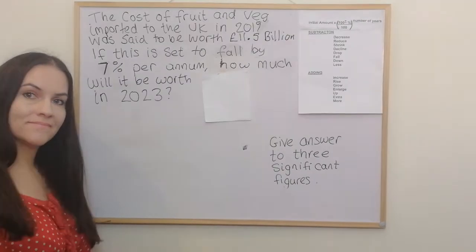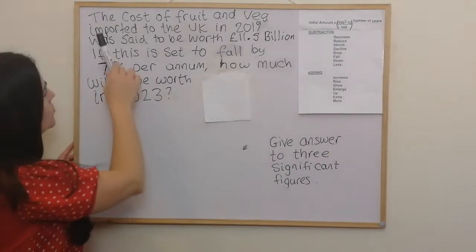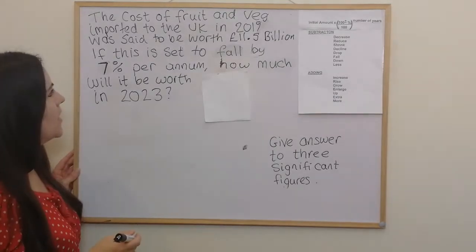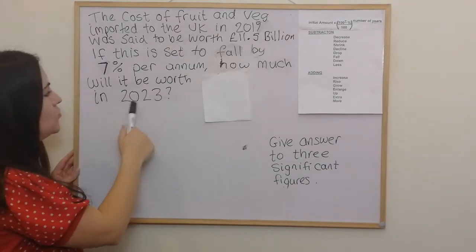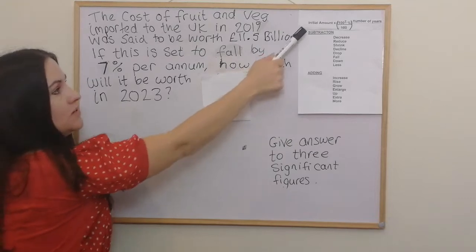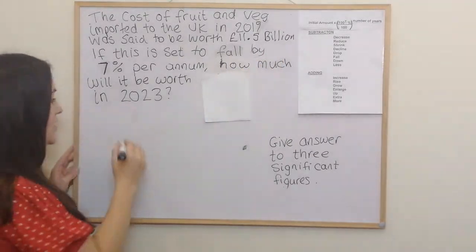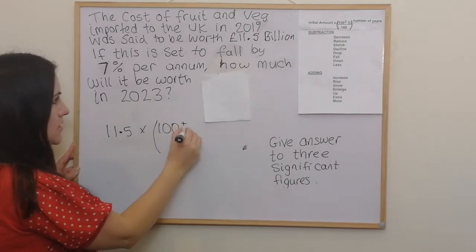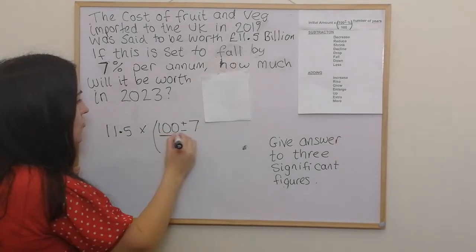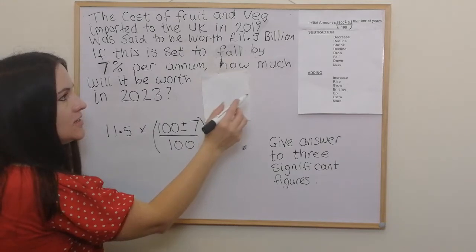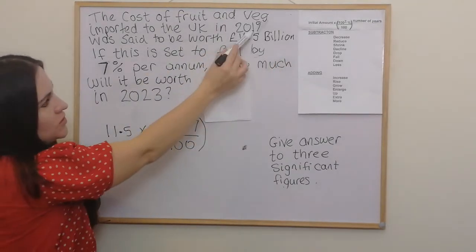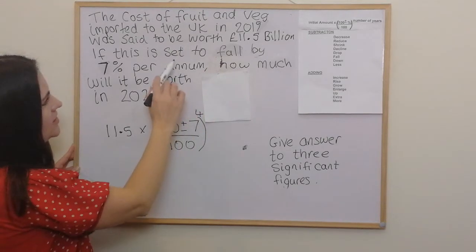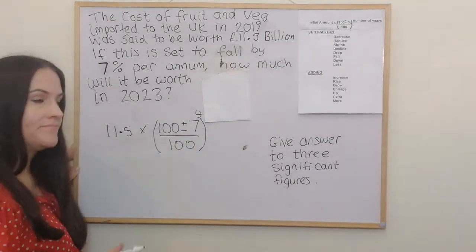In this example, the cost of fruit and veg imported to the UK in 2019 was worth £11.5 billion. If this is set to fall by 7% per annum, how much will it be worth in 2023? We write down the initial amount — 11.5 — then multiply by (100 plus or minus the percent, which is 7) over 100. What's different here is we're based on 2019: from 2019 to 2023 is four years, so the power is 4. It says 'fall', so that's a subtraction — we make it a minus.